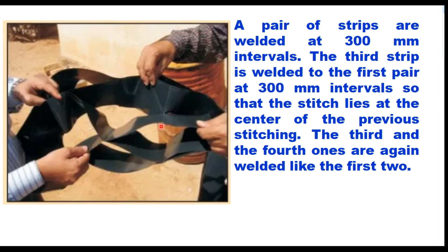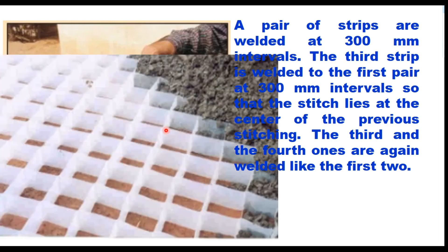The cells are made such that a pair of strips are welded together at 300 mm intervals. A third strip is then welded to the first pair at 300 mm intervals so that its stitch lies at the center of the previous stitching. A fourth strip has joints exactly opposite to the first one. That is how you create this kind of grid, which is then filled with concrete — that is the basic concept of cell-filled concrete pavement.